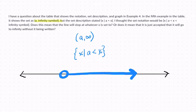But the set description stated this, and that is reading as X such that X is greater than A. They're saying, I thought the notation would be this, X where it's bigger than A but less than infinity.